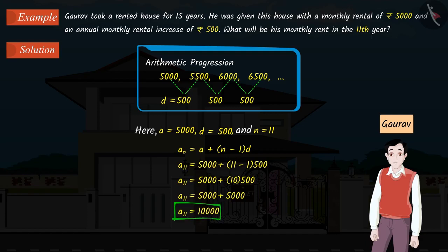Therefore, the 11th term of the AP comes out to be Rs. 10,000. So, the monthly rent for the 11th year will be Rs. 10,000.